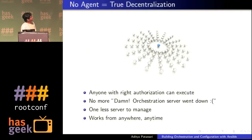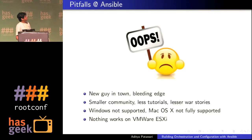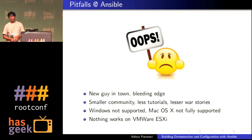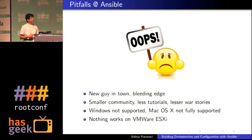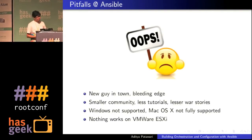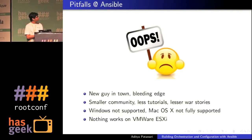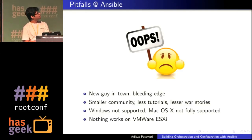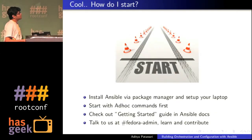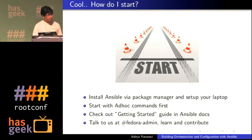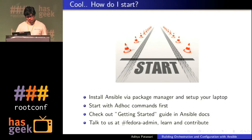Some pitfalls of Ansible: it's new, so as someone pointed out with lenses and other auxiliary tools, there aren't many available around Ansible at the moment, but it will catch up. There's a smaller community compared to Puppet, so it takes time. Windows is not supported — Puppet and Chef have started supporting Windows, so if you have Windows in your infrastructure, that's a problem. VMware ESXi is also a problem since nothing works there — no Puppet, no Ansible, no Chef. If you want to start, just install Ansible, start with ad hoc commands, and check out the getting started tutorial — it's basic but very helpful.